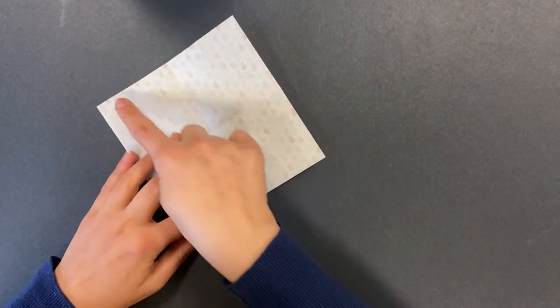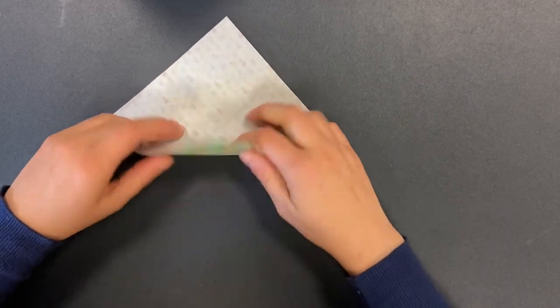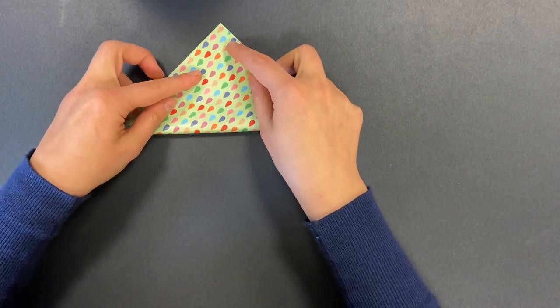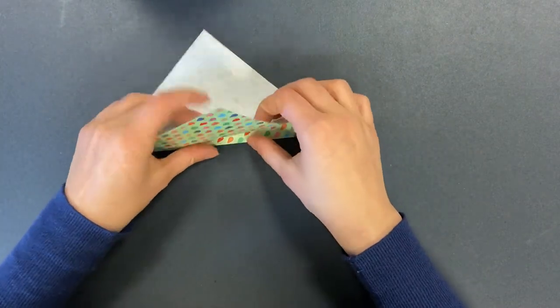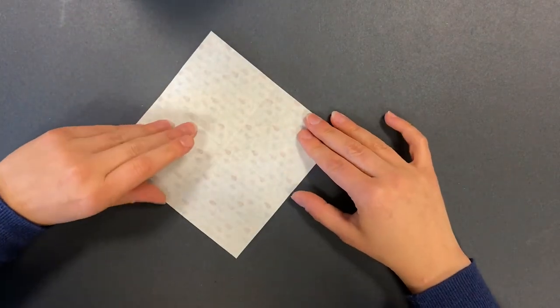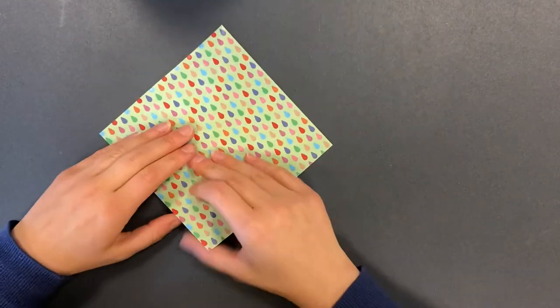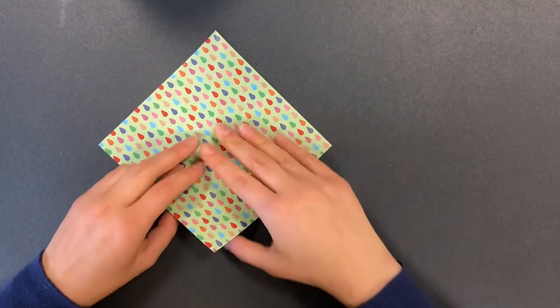Now fold the paper in half diagonally. Open. Flip the paper over. And fold it in half diagonally the other way.